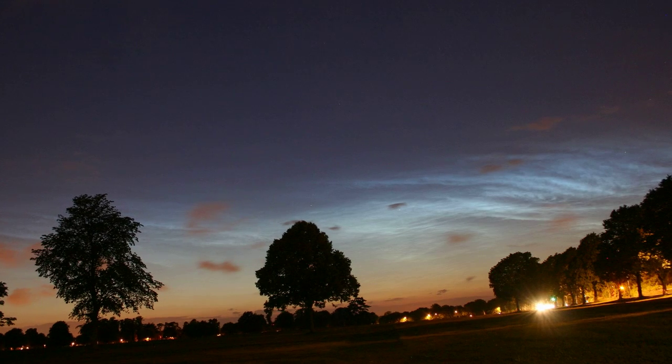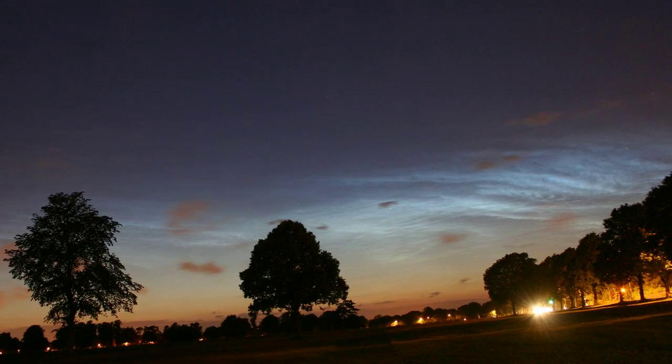If you want to take a picture of a noctilucent cloud display, then I'd recommend setting up your camera on a tripod to keep it sturdy and secure, and then take exposures of about 10 to 30 seconds in length with an ISO sensitivity of about 200 to 400. If you do capture some great astro images over the summer months, do send them in to our monthly Hot Shots competition - the email address is on screen below.